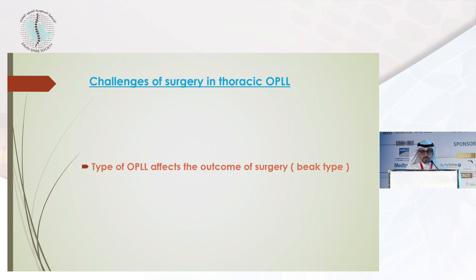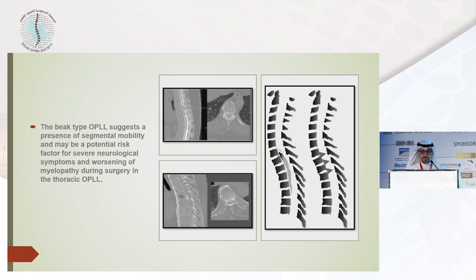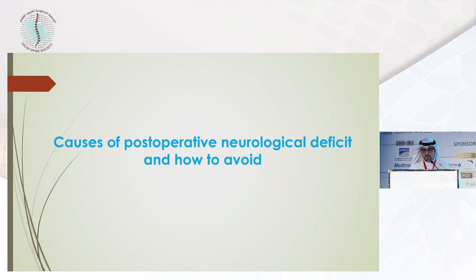Another challenge affecting surgical outcome is the beak type OPLL — I call it the thoracic monster. The beak type OPLL suggests the presence of segmental mobility and may be a potential risk factor for severe neurological symptoms and worsening of myelopathy during surgery in thoracic OPLL. Rather than the continuous type, the beak type shows multiple segmental mobility at levels.